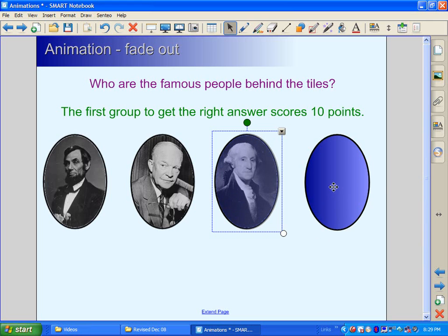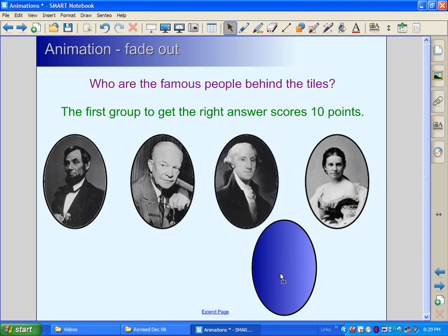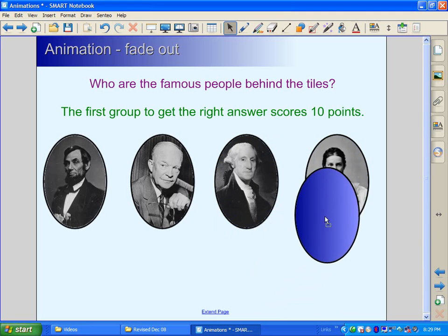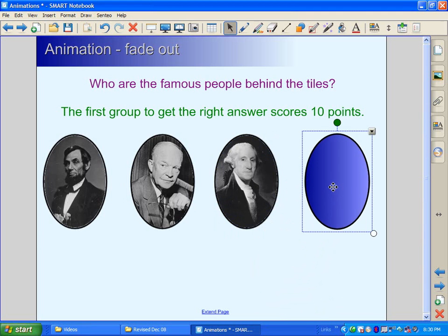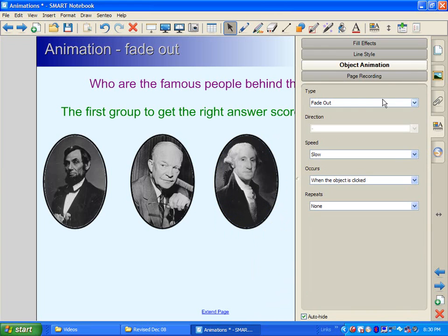First of all, the first thing you would do is you would actually put some pictures in the background first. And then you would draw a shape that goes on top. And then we're going to animate the shape. So we'll click on it. I'm going to go to the Properties tab. I'm going to go to Object Animation. And this one will select Fade Out.